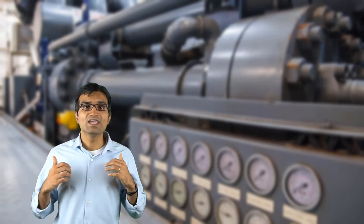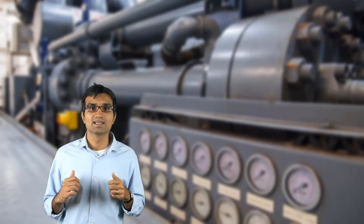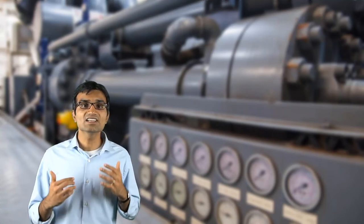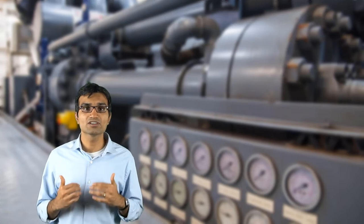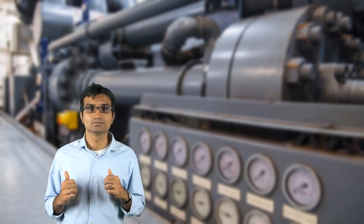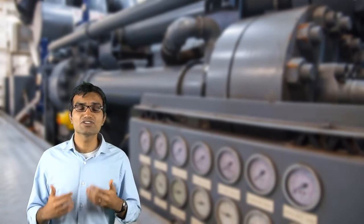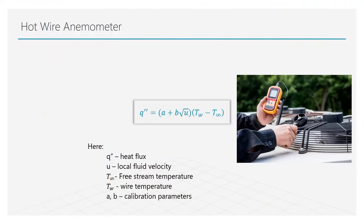Hot wire anemometer is another intrusive way of measuring the local velocity in the flow field. In this method, we insert a thin long wire into the flow. This wire is electrically heated and attempts to measure the local flow temperature. Based on the overall heat flux and the temperature difference between the wire and the fluid, a local velocity is calculated. This method, however, makes use of carefully calibrated coefficients to estimate the local velocity of the flow.